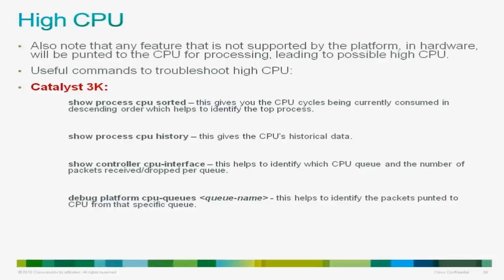How do you differentiate if the CPU is utilized because of process or interrupt? In the show process CPU sorted output, the very first line shows the total percentage of utilization followed by the interrupt percentage. If you see a relatively higher percentage occupied by interrupt, you can identify it is because of traffic. To see if the CPU issue occurred in the past, use show process CPU history, which gives a trend report for the past 72 hours.